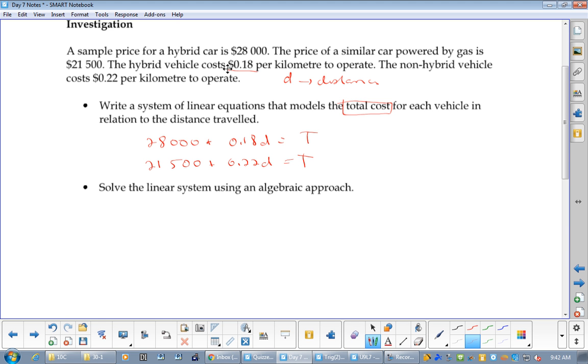Remember, these are lines. When the two lines meet, what does that mean? They intersect. That's when they will cost the same. Who will win after that point? The hybrid will win after that point.